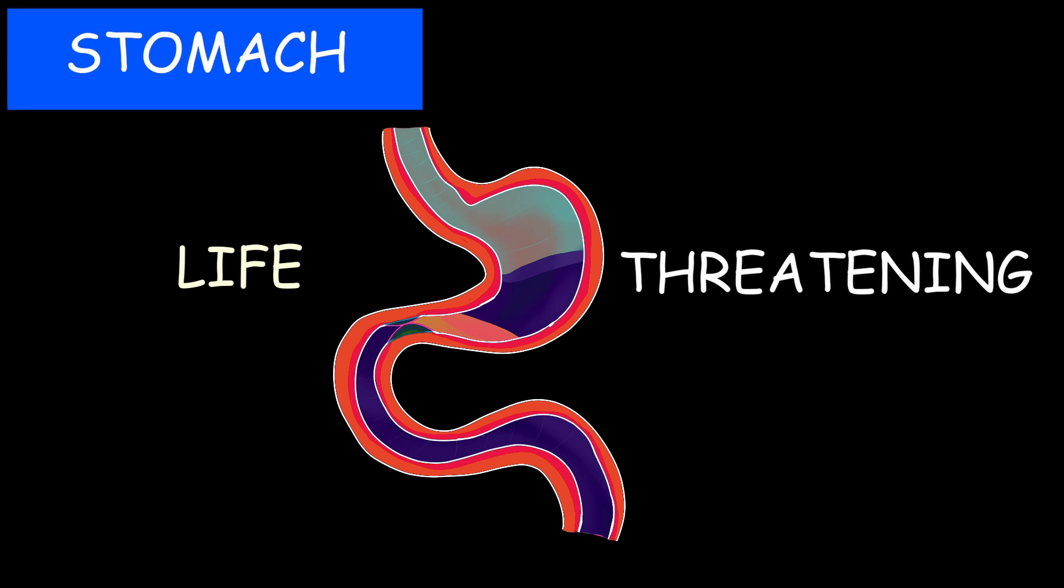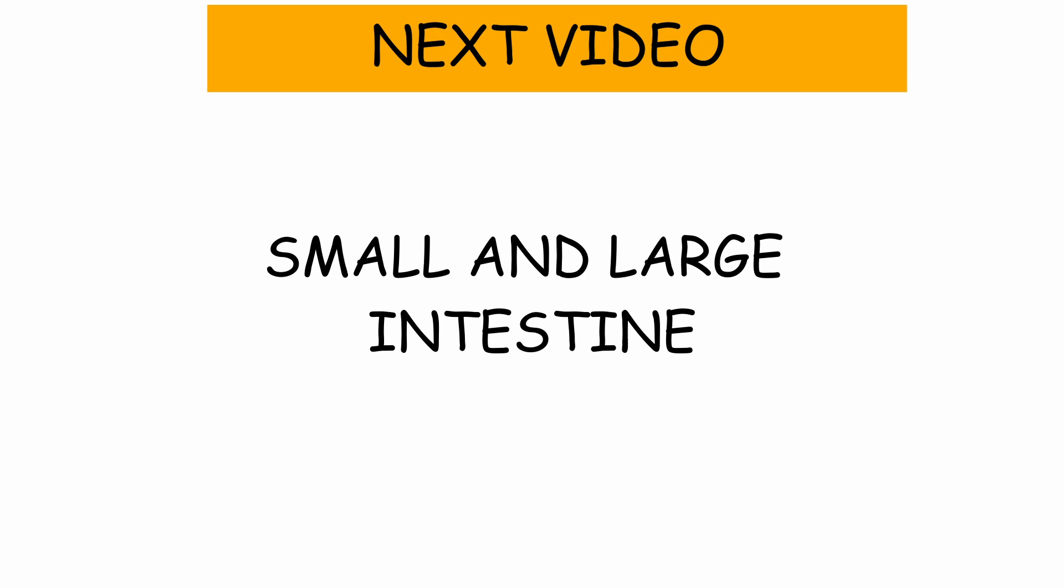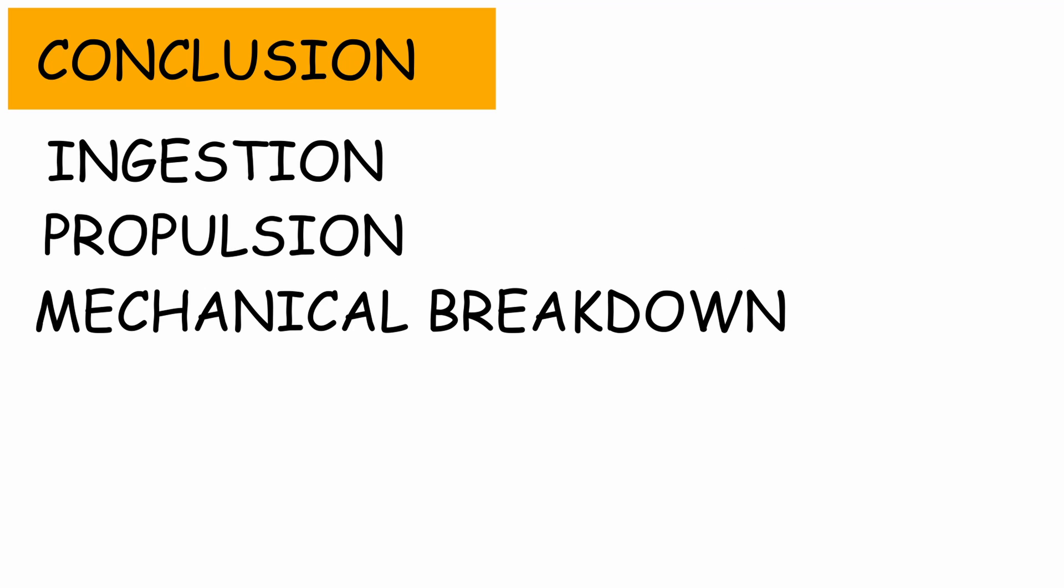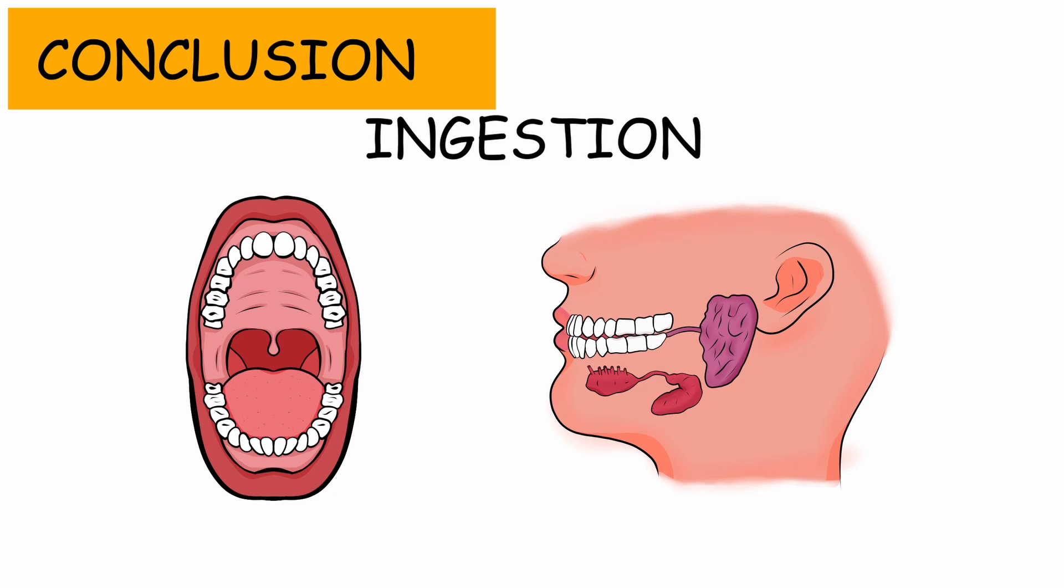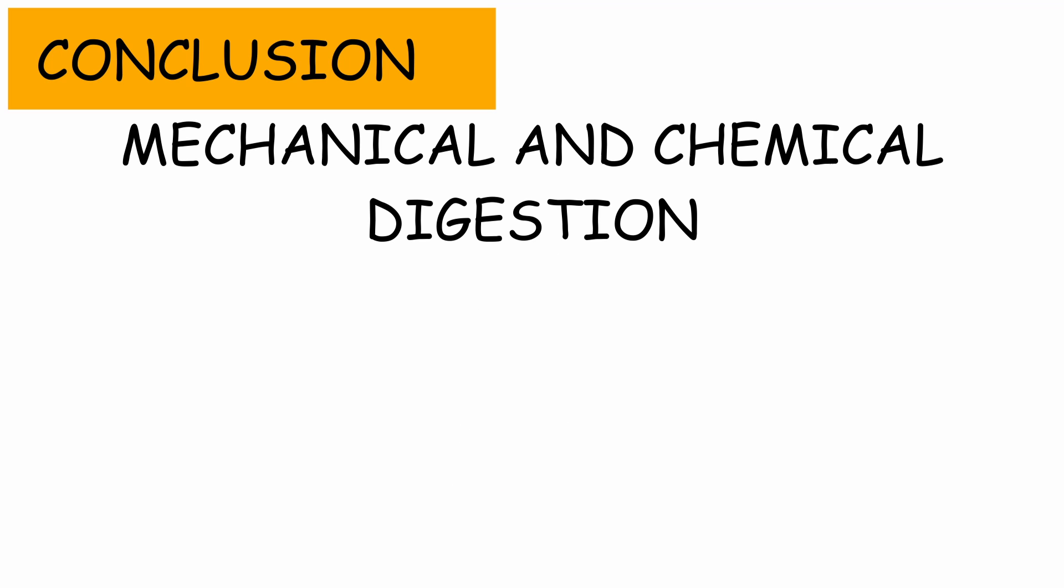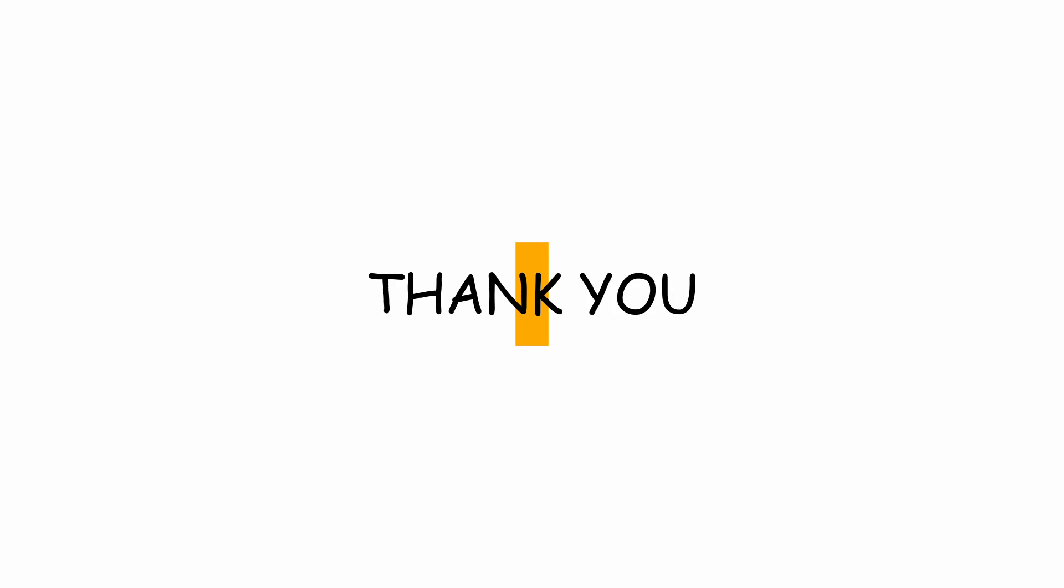This is a long process, so the rest of the video, which is the small and large intestine, will be covered in another video. To conclude, in this video we have looked at ingestion, propulsion, mechanical breakdown, and digestion. Ingestion was the consumption of food through the mouth. Propulsion was the movement of bolus in the esophagus. And finally, mechanical and chemical digestion occurred in the stomach and in the mouth. Thank you so much for watching the video. See you in the next one.